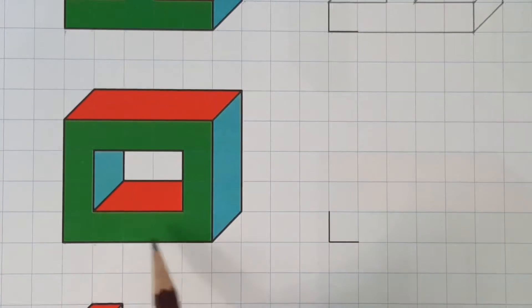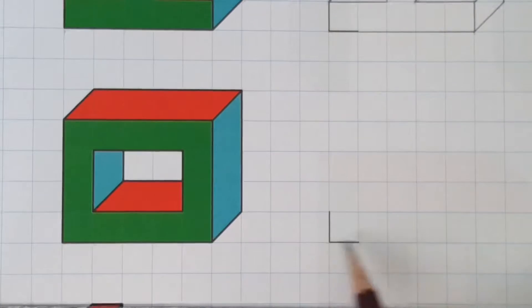And let's start by drawing the base. The base here is five squares to the right.